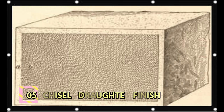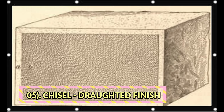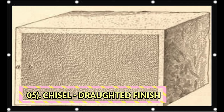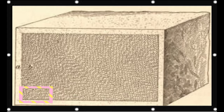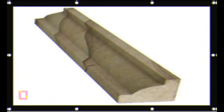Chisel drafted margins for stones: Chisel draft margins are provided on stones which represent uniform joints in stone masonry. These margins may be pitched, square, or chamfered. This is done using a chisel.